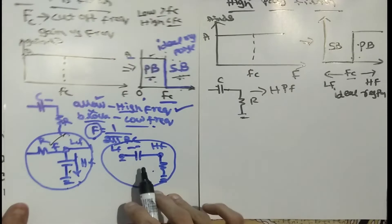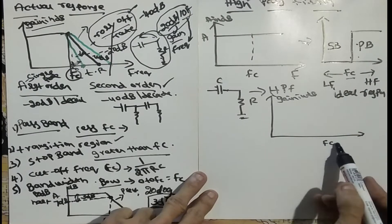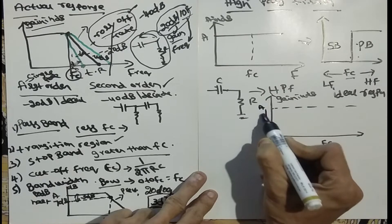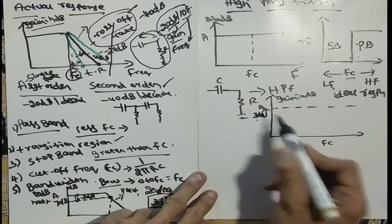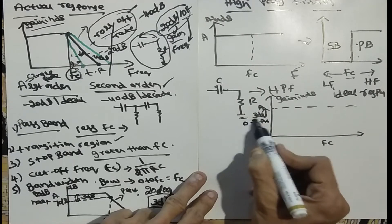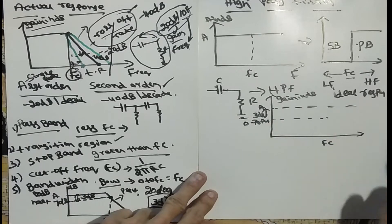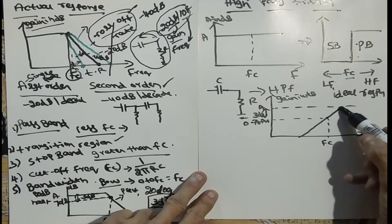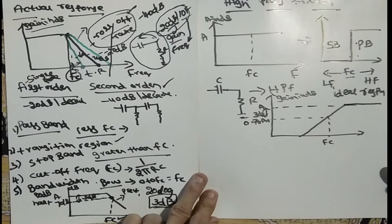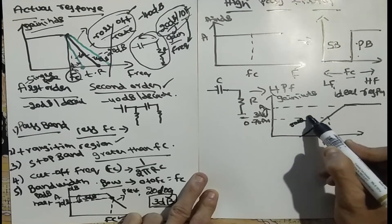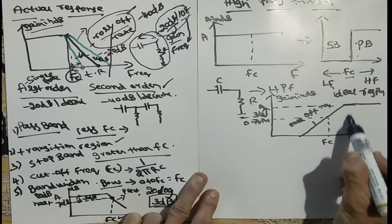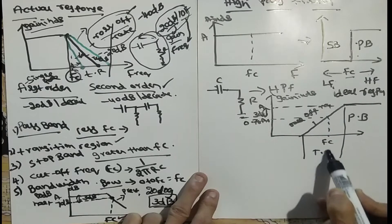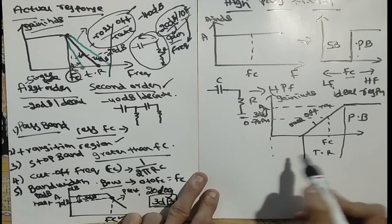Next we will look at the actual response of the circuit. The cutoff frequency is defined such that the gain shows a 3 dB variation — at the point where the gain equals 0.707 of the maximum gain is fc. The slope shown is known as the roll-off rate. In the actual response, there is a pass band, a transition region in between, and a stop band.